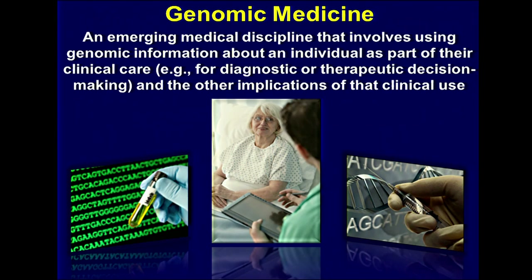We take a very specific definition of this: we regard genomic medicine as an emerging medical discipline that involves using genomic information about an individual as part of their clinical care — for example, for diagnostic or therapeutic decision-making — and other implications of that clinical use. This definition very much is a key focus of what is going on now in human genomics research, both here at NIH and really around the world.